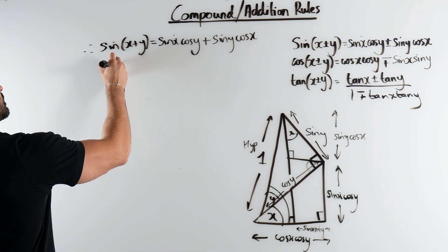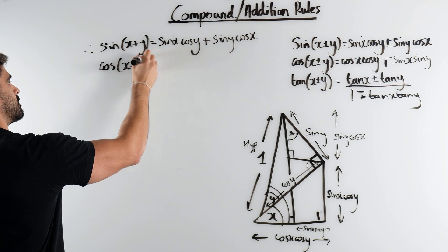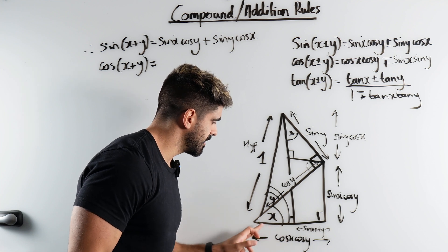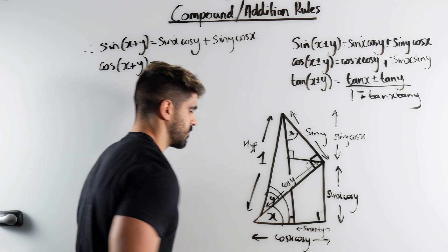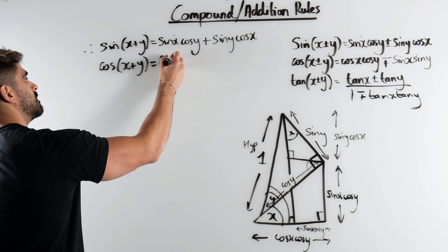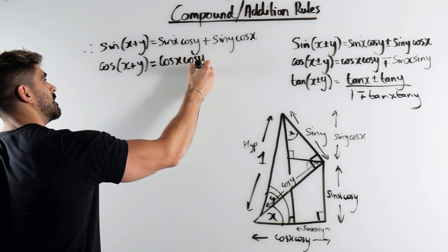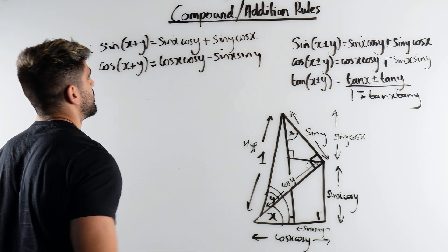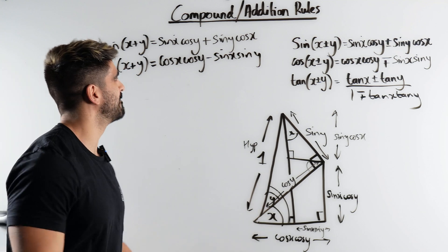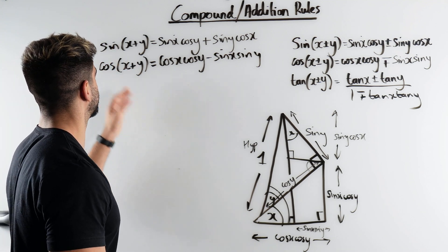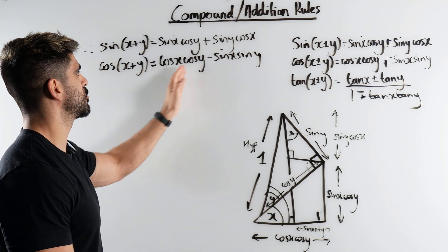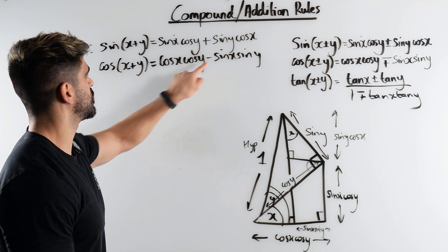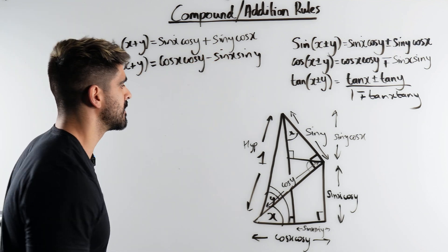What about cos? Now cos, remember, is this length — we're going to do this length minus this one. So it's cos x cos y minus sin x sin y. Proved. My students describe this as: the cos expansion goes cos cos, sin sin. Cos changes the sign. And that's that.